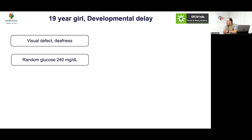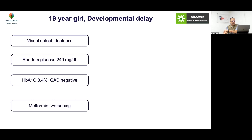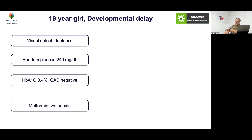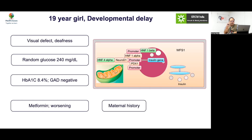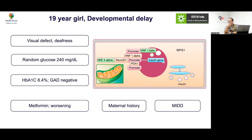Case 14: A 19-year-old girl with developmental delay, visual defect, and deafness, with random sugar 240 — not previously diagnosed with diabetes. HbA1c 8.4, GAD negative, placed on metformin and worsened. There is multi-system involvement. DIDMOAD could be a possibility, but mitochondrial diabetes must also be considered. There is maternal diabetes as well. This was mitochondrial diabetes — specifically the MIDD variant with deafness and developmental delay. Do not use metformin in this disorder as these patients are prone to lactic acidosis.